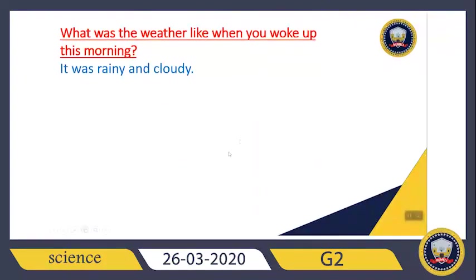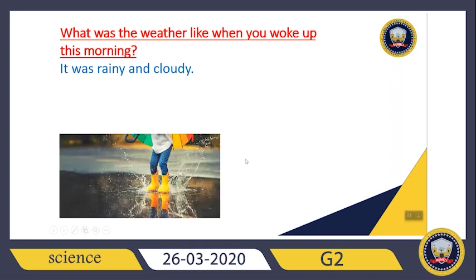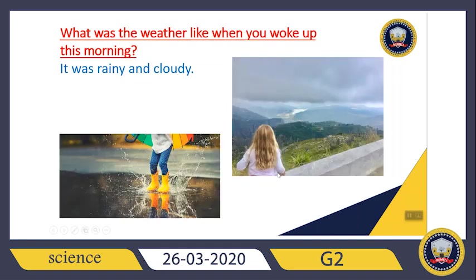What was the weather like when you woke up this morning? When I woke up this morning, I saw that the weather was rainy and cloudy. It was rainy and cloudy — do you see the clouds and the rain? So this morning it was rainy and cloudy.